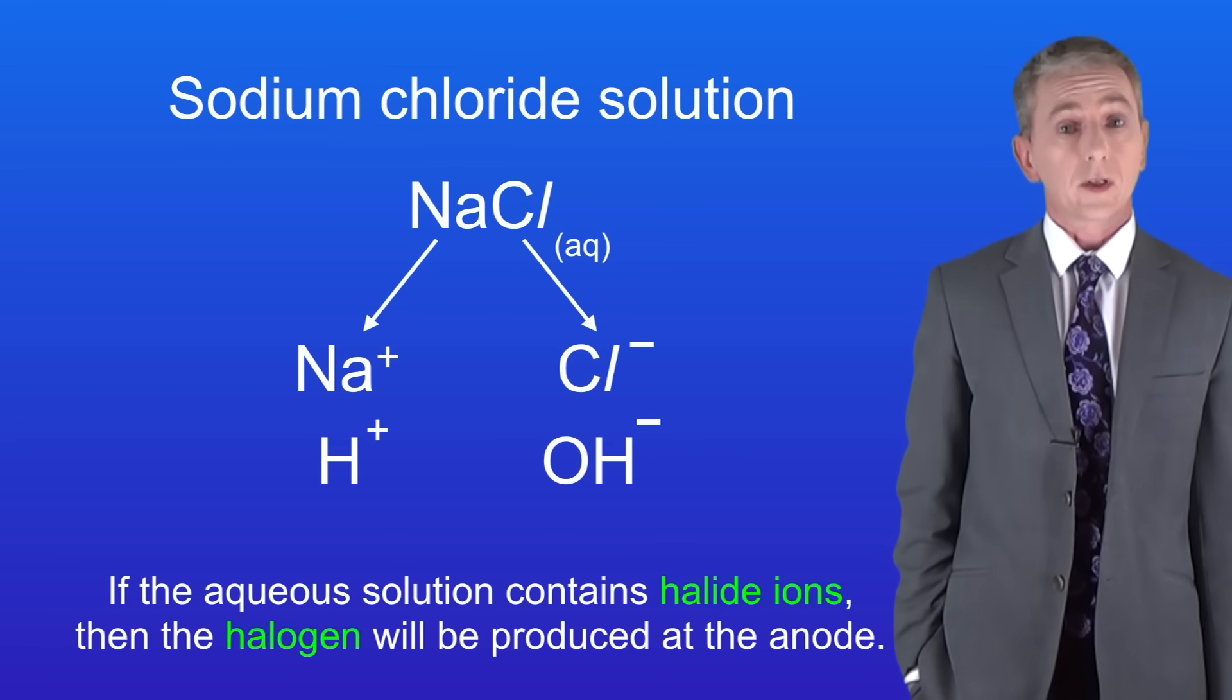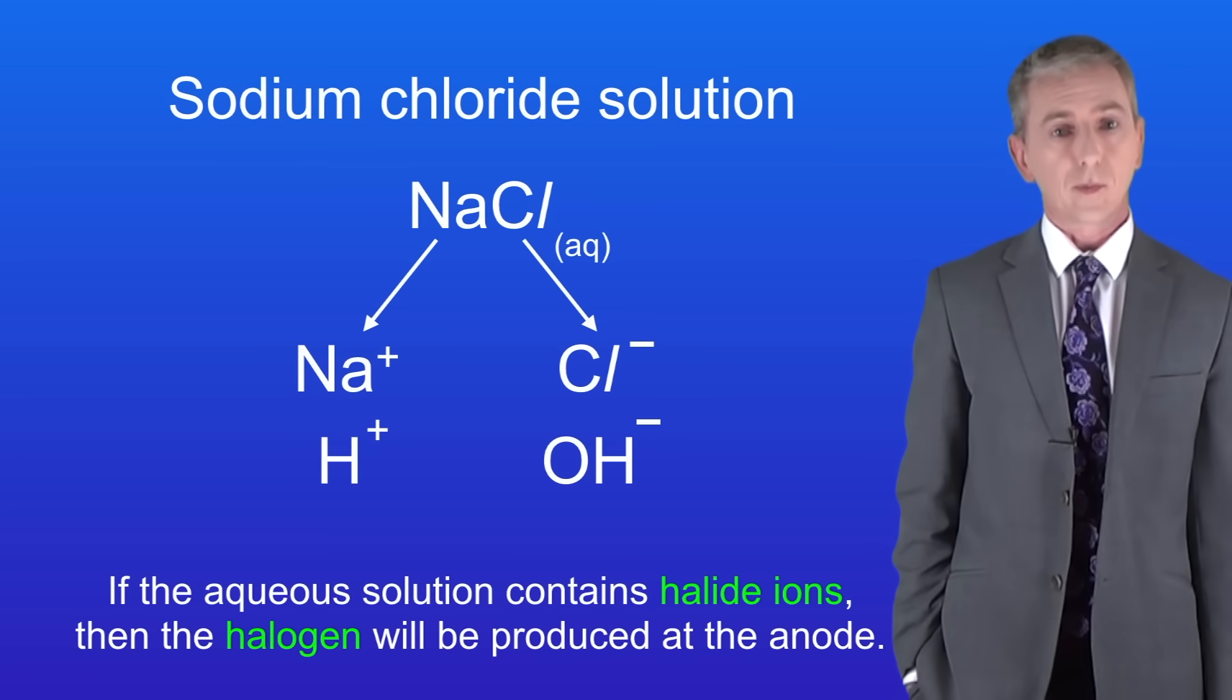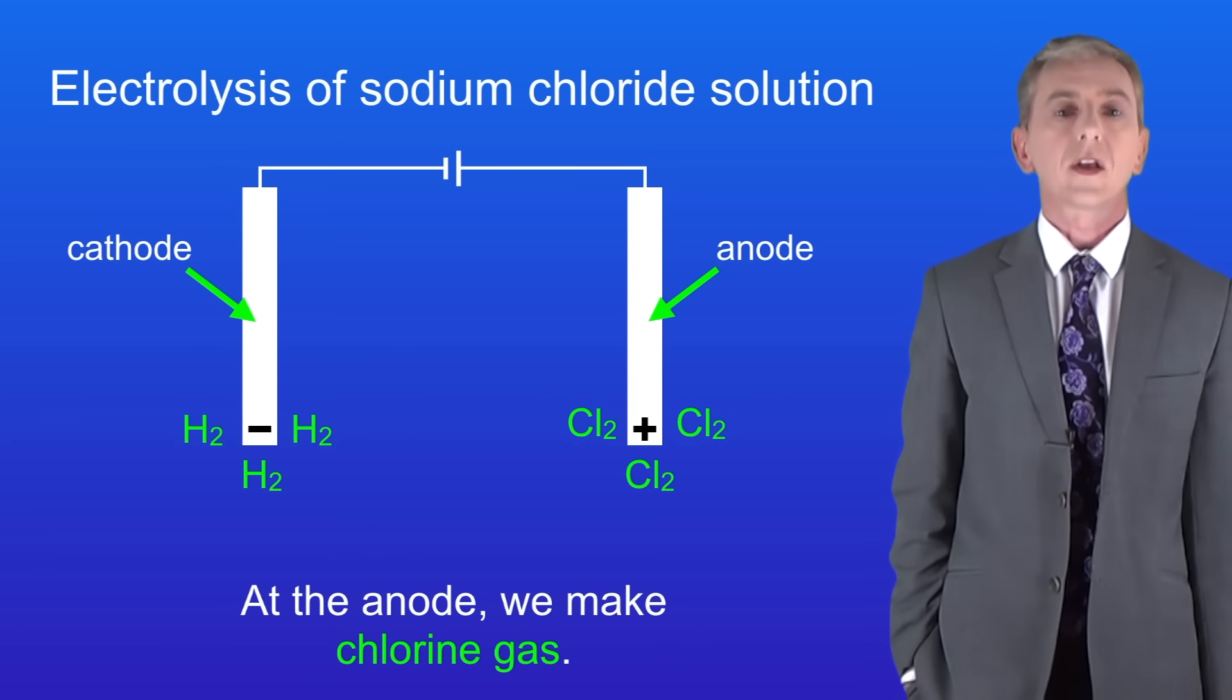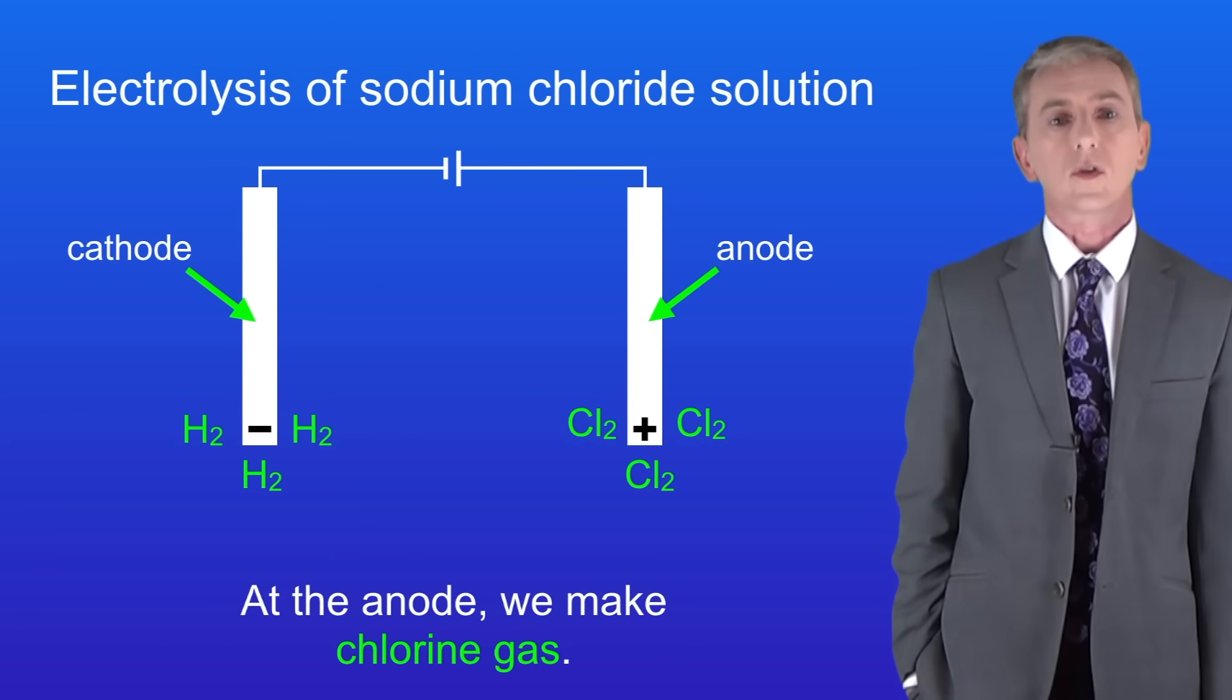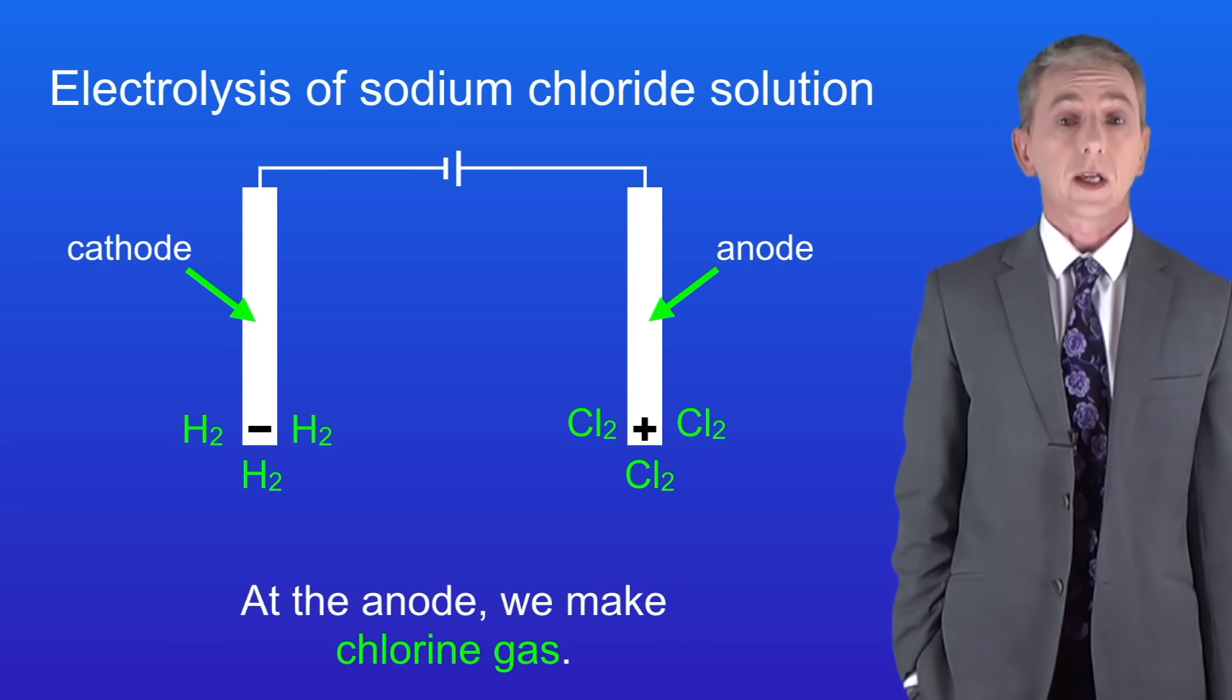If the aqueous solution contains halide ions such as chloride, then the halogen will be produced at the anode. So here's the anode and we can see that chlorine gas is being produced. That's because this solution contains the chloride ion which is a halide.